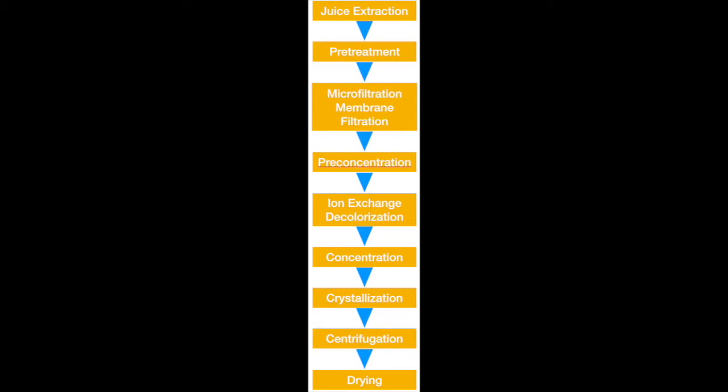It is the process technology for the decolorization of the sugar industry. Sugar decolorization process: The ion exchange resin and granular activated carbon are mostly similar in process, but the resin system design is more flexible.